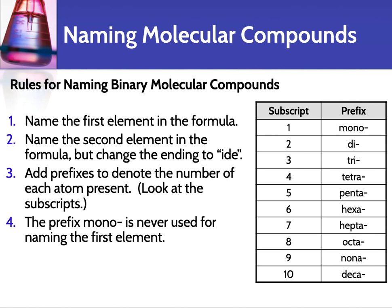When you're naming the first element, you don't add 'mono' — so you just leave that off if there's only one of the first element.